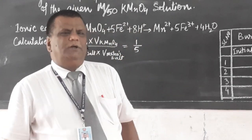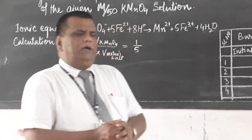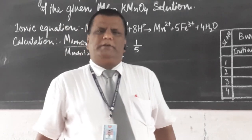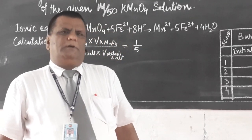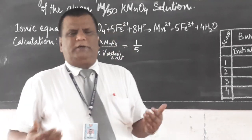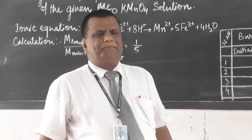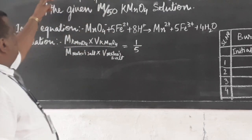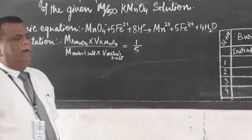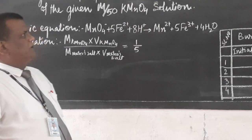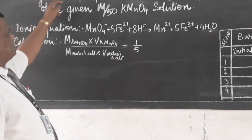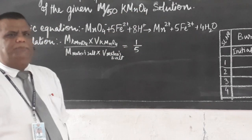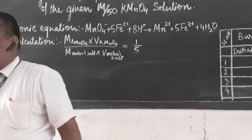Hello students. Once more, I am here to give you one more titration experiment of class 12. This will be the third experiment of titration. The name of this titration is: to determine the number of moles of water of crystallization in a sample of Mohr's salt, 19.6 grams of which have been dissolved per liter of solution.